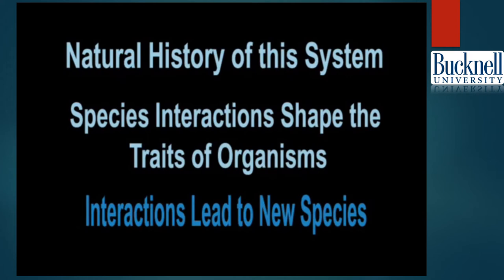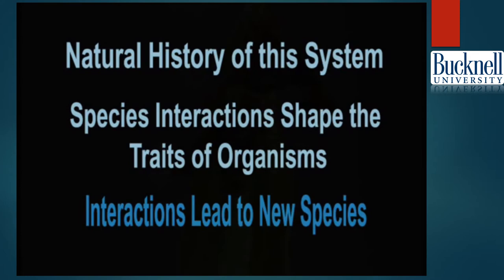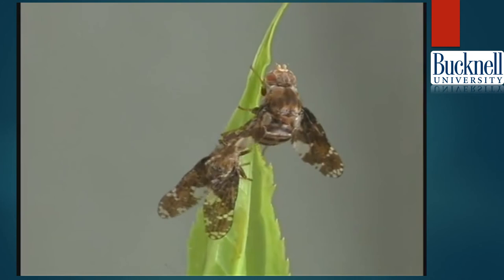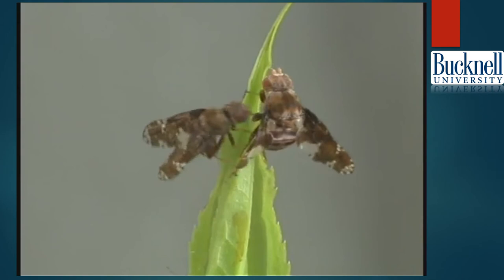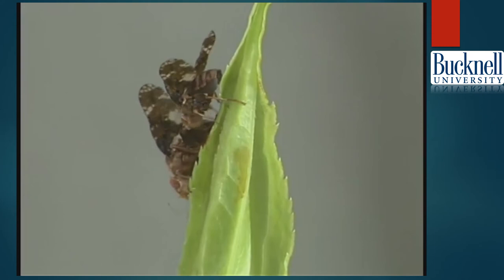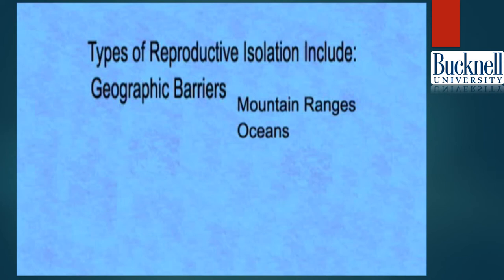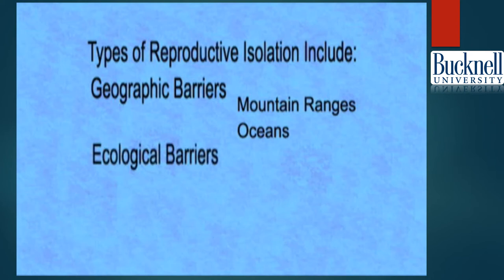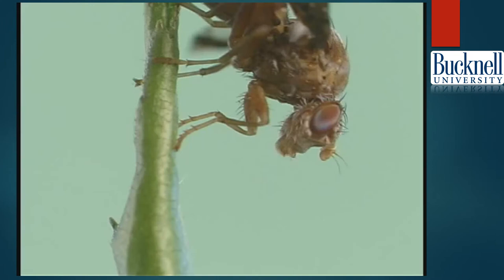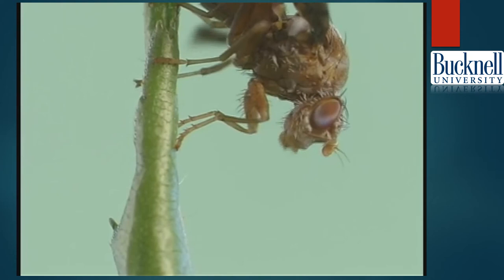But can species interactions lead to the formation of new species? A species is a group of organisms that naturally mate only with their own kind — members of a species are reproductively isolated from other organisms. Reproductive isolation may be due to geographic features such as mountain ranges or oceans, or to ecological barriers. Mate choice, mating times, and selection of host plants on which mating occurs are a few examples of ecological barriers to reproduction.